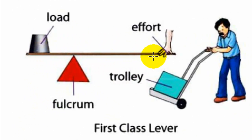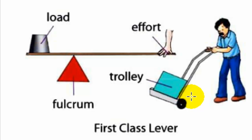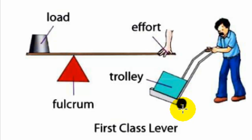Looking at the figure, we can see the load on one side, the effort on the other side, and the fulcrum in between the load and the effort. This confirms it is a first class lever. In a trolley, the handle is where effort is applied, the load is placed in the body, and the wheel acts as the fulcrum — so the trolley is a first class lever.